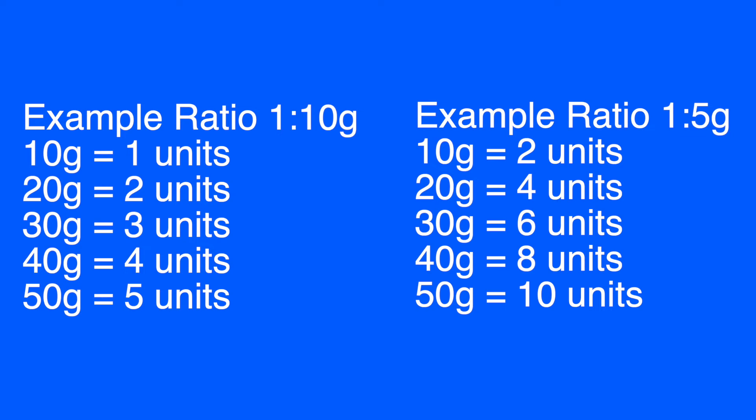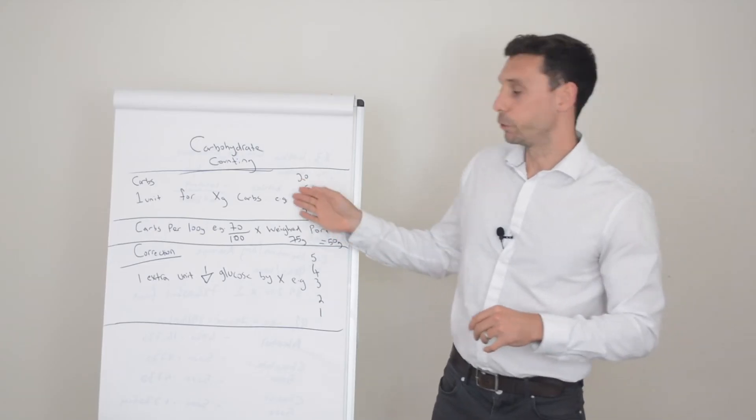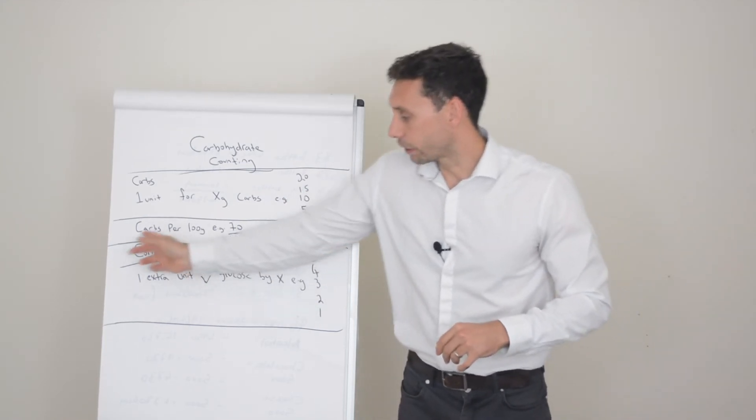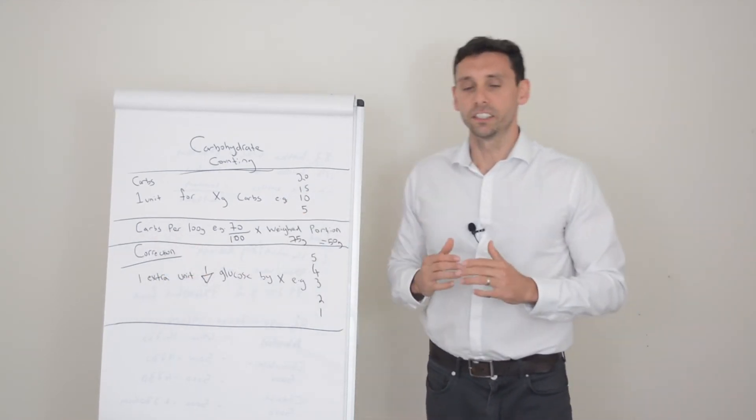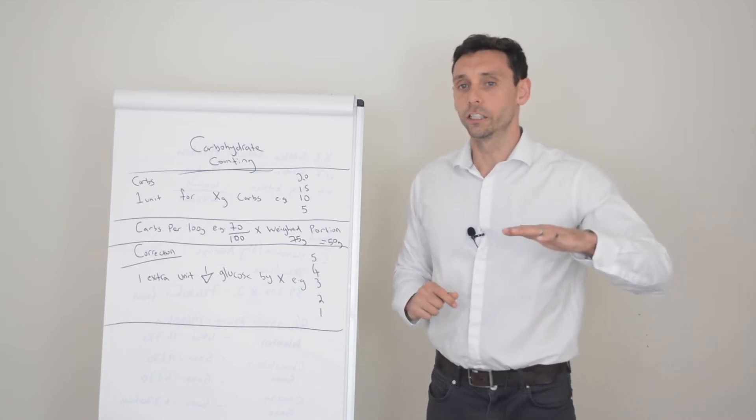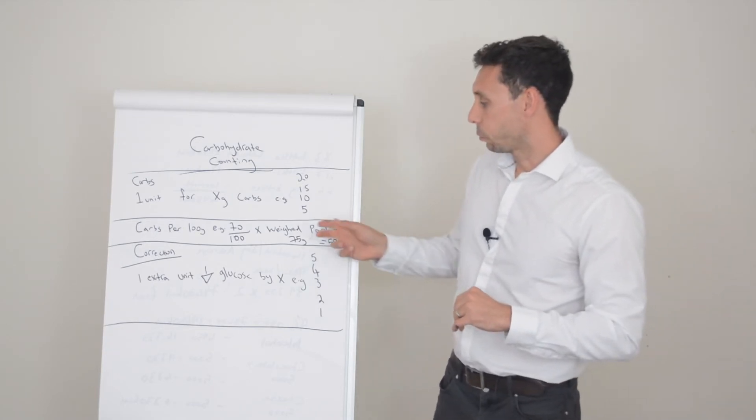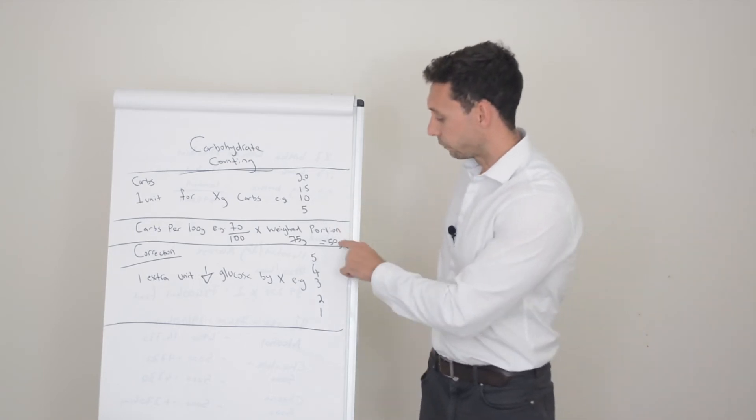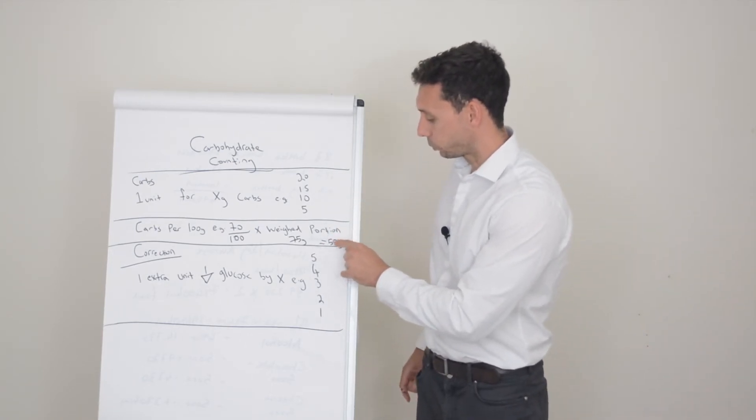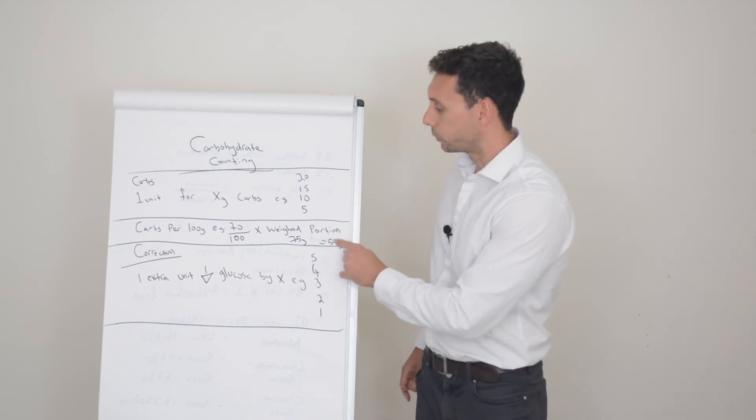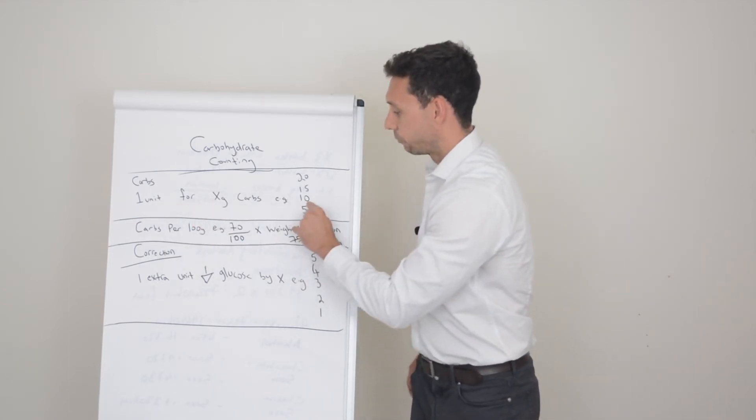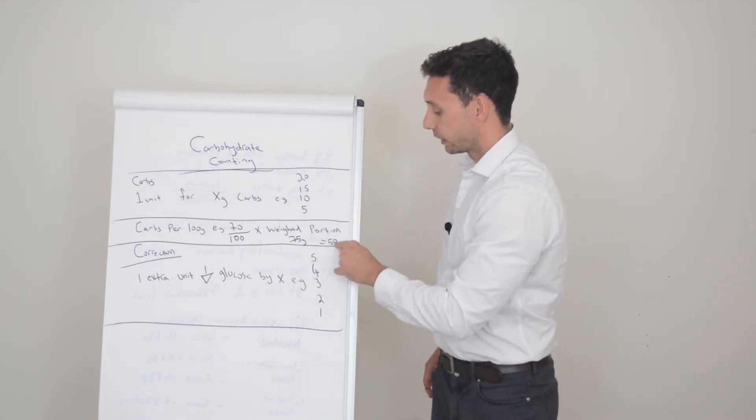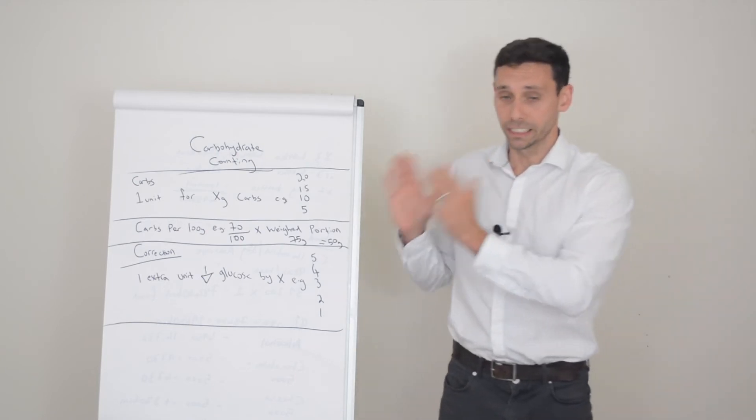But of course that's only going to help you with the food that you're eating. You might need to add a correction dose on top of this. So this is the extra insulin you give to reduce high glucose levels. So the idea is you work out your carbohydrates you know what your ratio is so let's say we're taking 50 grams for our meal so we know on a one unit to 10 ratio we're going to take five units. So we've got five units that's happening.